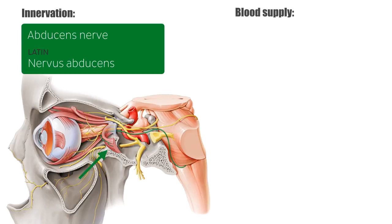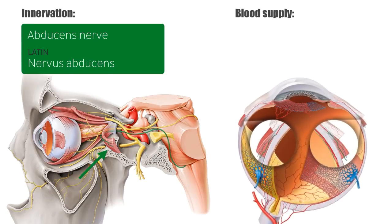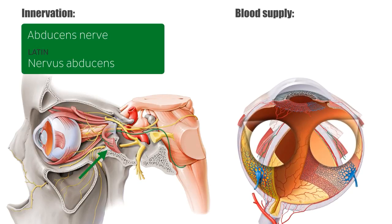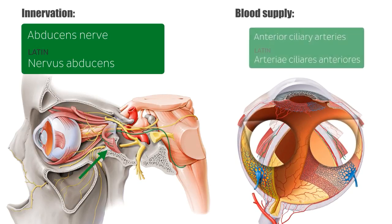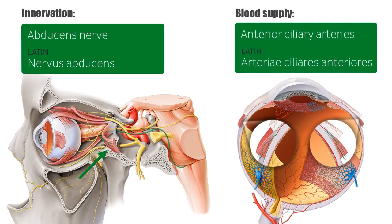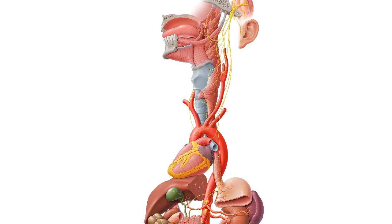The lateral rectus muscle receives arterial blood from one of the anterior ciliary arteries, highlighted in green, which is a branch of the ophthalmic artery.